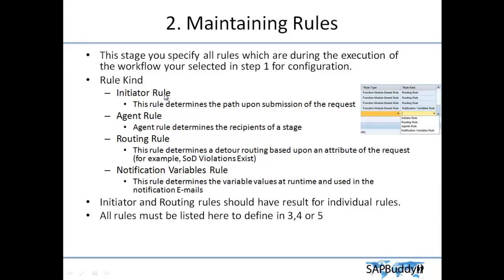Next is Rule Kind. There are four types of rule kind: Initiator Rule, Agent Rule, Routine Rule, and Notification and Variable Rule. The Initiator Rule determines the path of the submitting request — for example, if you are creating a request for a new user, it determines which path it should follow. There should be only one initiator rule per process ID, but you can have multiple paths. The initiator rule triggers the request.